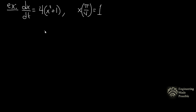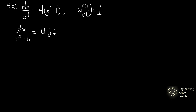This example asks us to find an explicit solution of a given initial value problem. The previous two examples had an arbitrary constant — a one-parameter family of solutions — because we had no initial condition. In this case we do have one, so we'll be able to solve for the constant. We separate the x's on one side and the t's on the other.